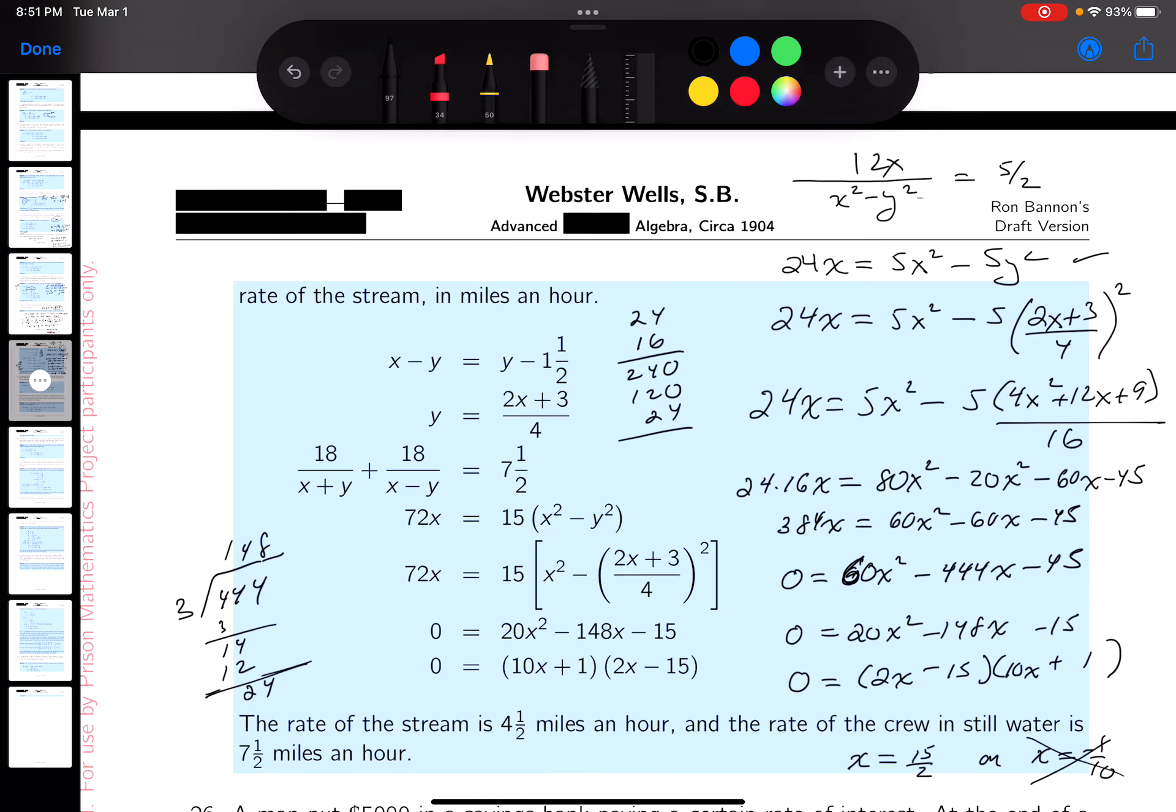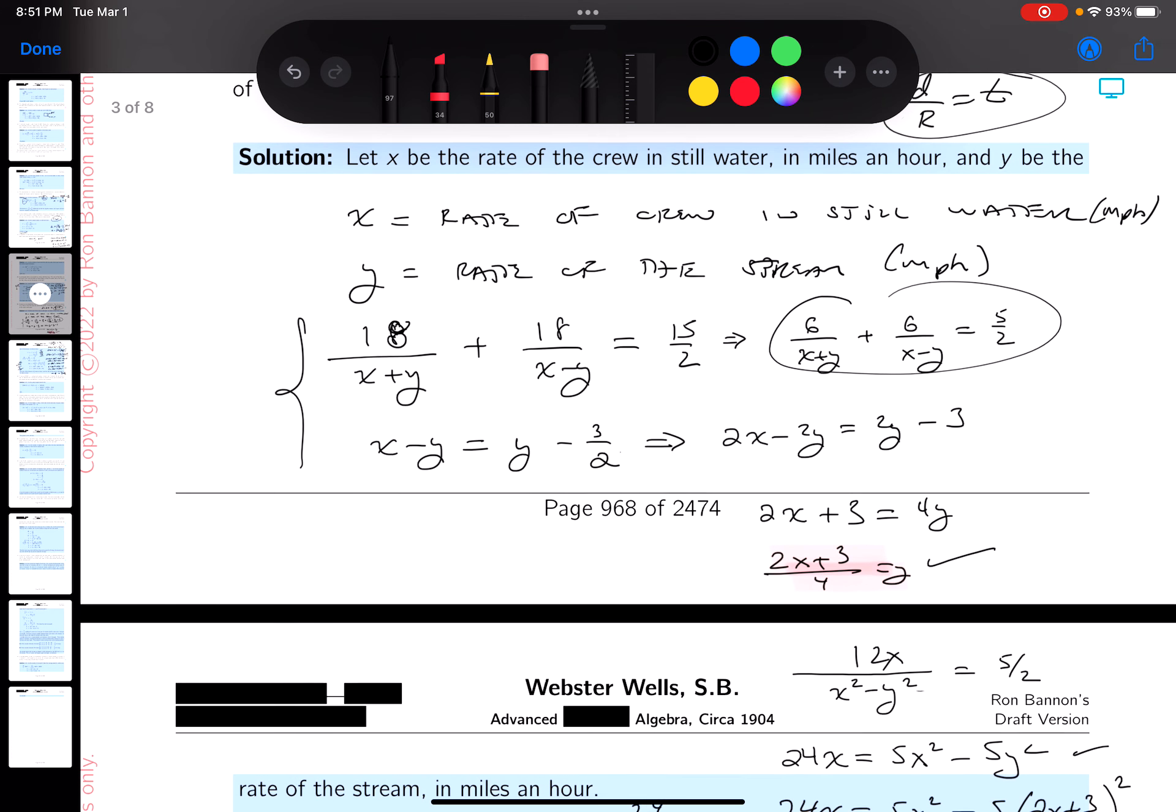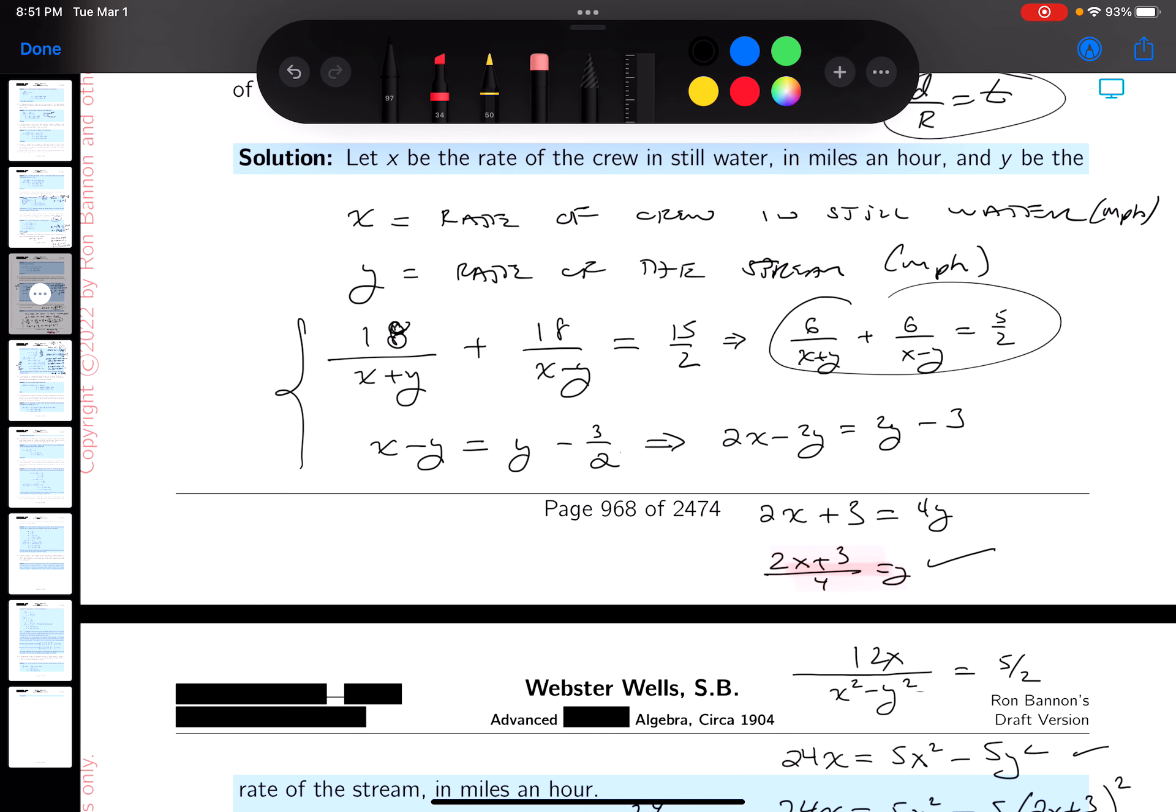This is a positive rate, the boat's rowing. So I'm gonna say that X is the rate of the boat in still water, that's 7.5 miles an hour by the way.